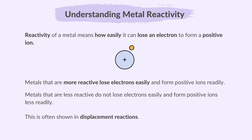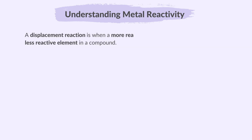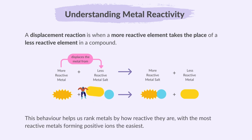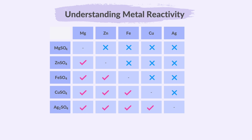This is often shown in displacement reactions. A displacement reaction is when a more reactive element takes the place of a less reactive element in a compound. In the case of metals, a more reactive metal can push out a less reactive metal from its compound. This behavior helps us rank metals by how reactive they are, with the most reactive metals forming positive ions the easiest. If you examine a table showing displacement reactions between metals and metal salt solutions, you will see that a metal higher in the reactivity series will displace a metal lower in the series from its salt solution.